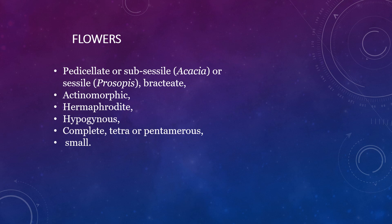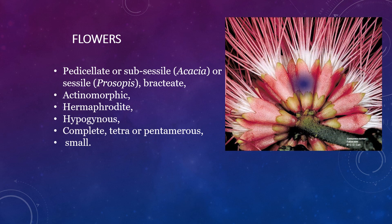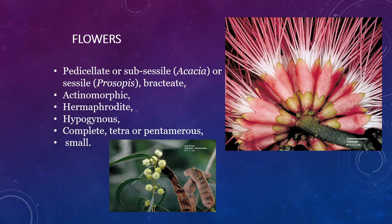Flowers of family Mimosaceae are pedicellate or subsessile like in Acacia, or sessile like in Prosopis. They are bracteate, actinomorphic, hermaphrodite (bisexual), hypogynous (ovary superior), and complete flowers having both androecium and gynoecium in the same flower. They are tetra- or pentamerous — the petals can be four or five in number — and the flowers are very small.